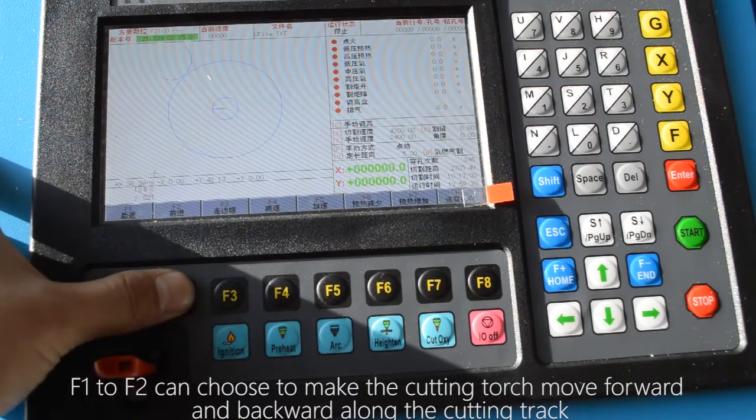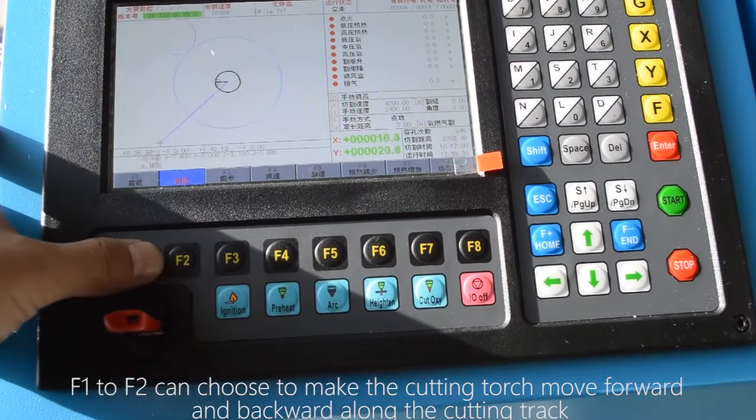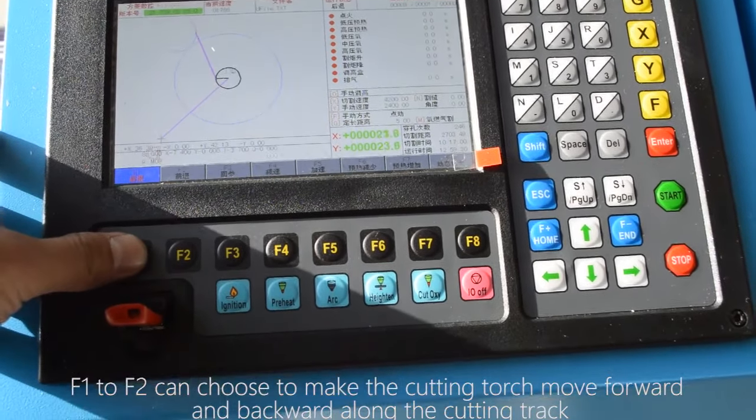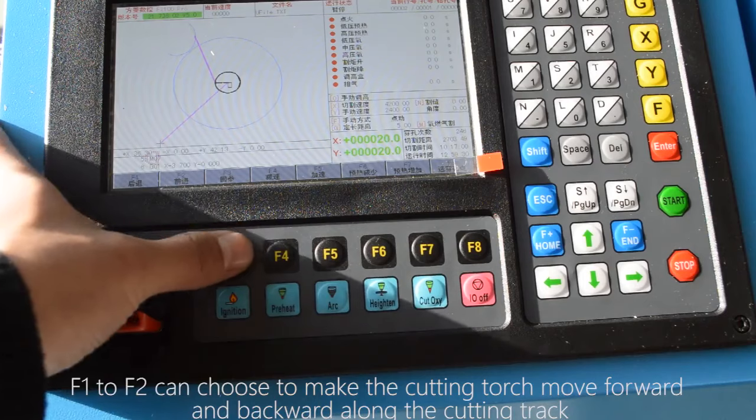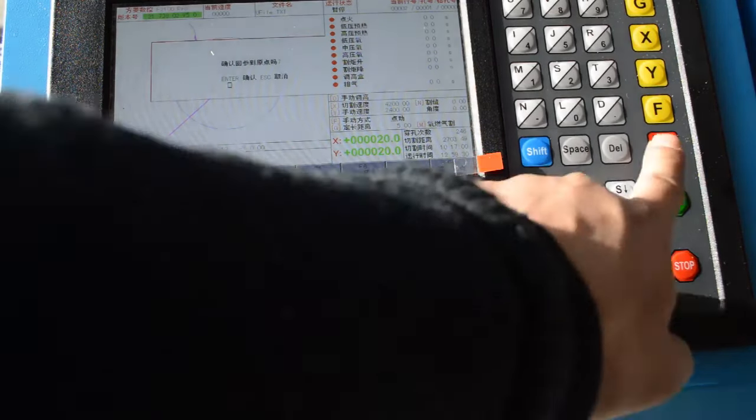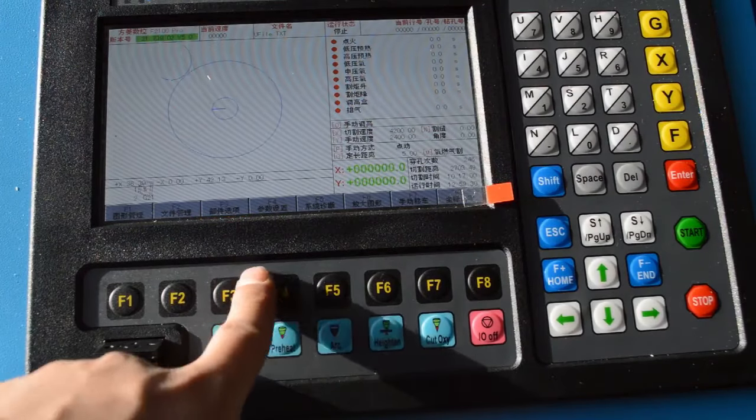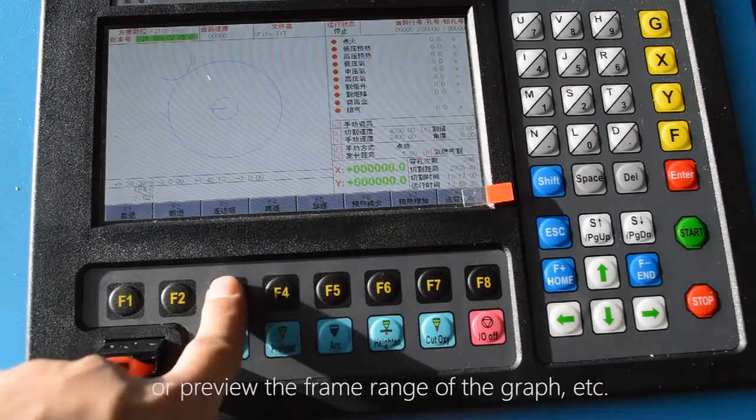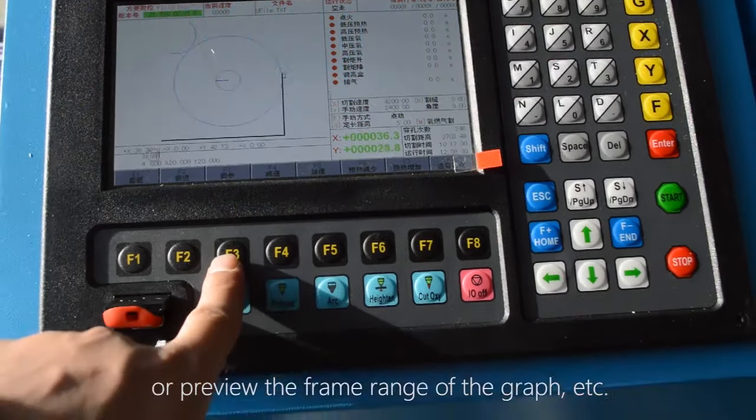F1 to F2 can choose to make the cutting torch move forward and backward along the cutting track, or preview the frame range of the graph.